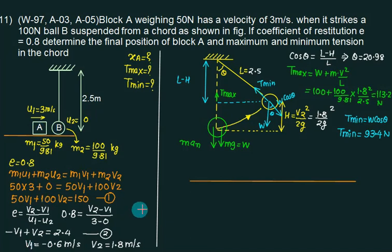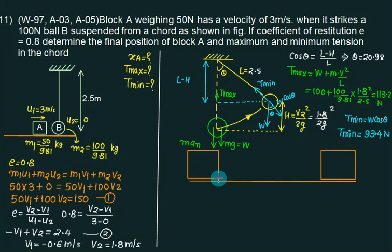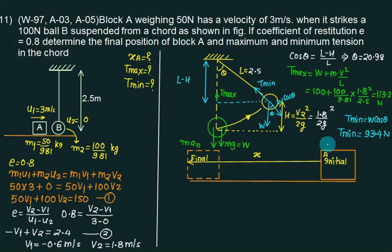The final velocity of block A, v1, is negative, so the block will go to the left side after impact. It starts from the impact point and moves to the left, coming to rest due to friction. The displacement is x. The initial velocity for block A in this case equals v1 = 0.6 m/s.